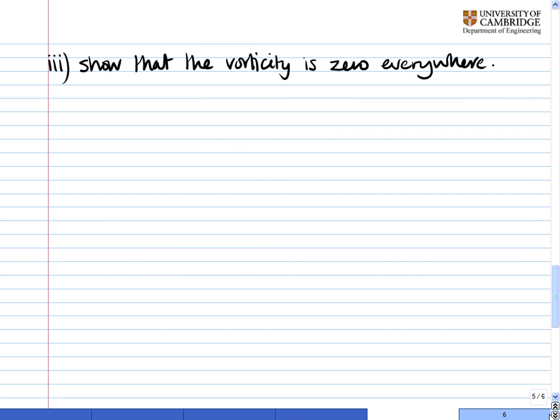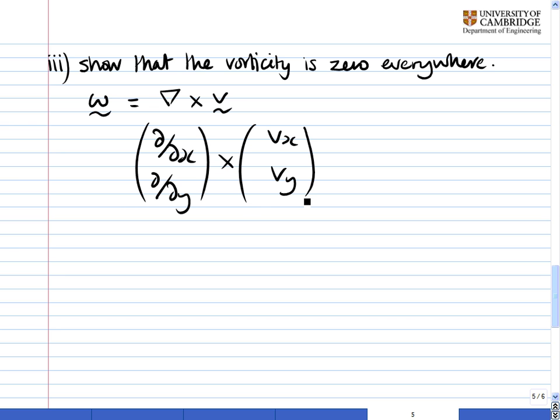And the next thing we have to do is show that the vorticity is zero everywhere. Now the vorticity is defined, it's often given the symbol omega, it's defined as del or nabla crossed with v, or the curl of v. Now we can again use our Cartesian shorthand here, so we've got d by dx, d by dy, crossed with vx, vy, and that's equal to dvy by dx minus dvx by dy.